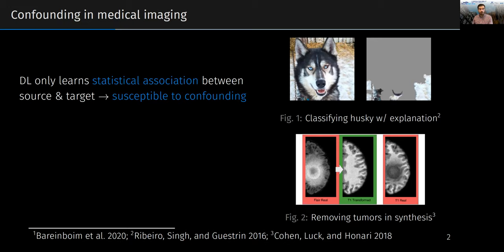Two examples are shown on the right. In the first example, there's input to the network — a picture of a husky — and the explanation for classifying the image as a husky shows that it's not looking at the husky but the background, which is snow: a spurious correlation in the training data. A medical image related example is shown below, where a cycle GAN learns to remove a tumor in an image-to-image translation task, again because of a spurious correlation in the training data.